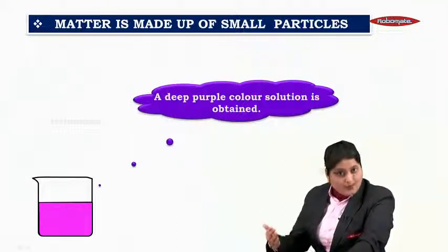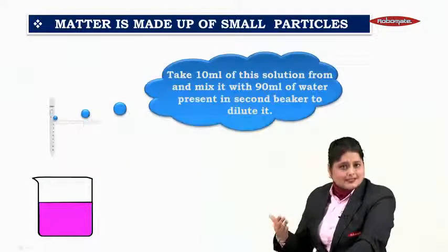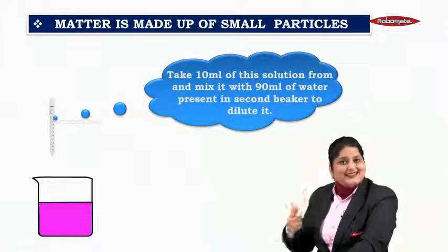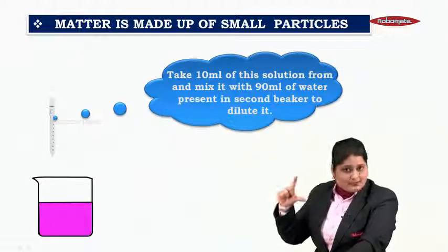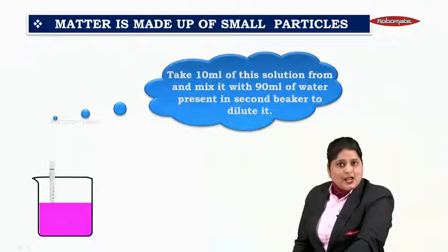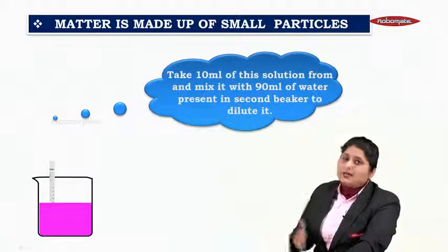Next, we will move ahead with the experiment. What you have to do next is take 10 ml of this solution from this beaker using a measuring cylinder, and mix it with 90 ml of water present in second beaker to dilute it. So we are going to dilute it further and see what color we are getting.